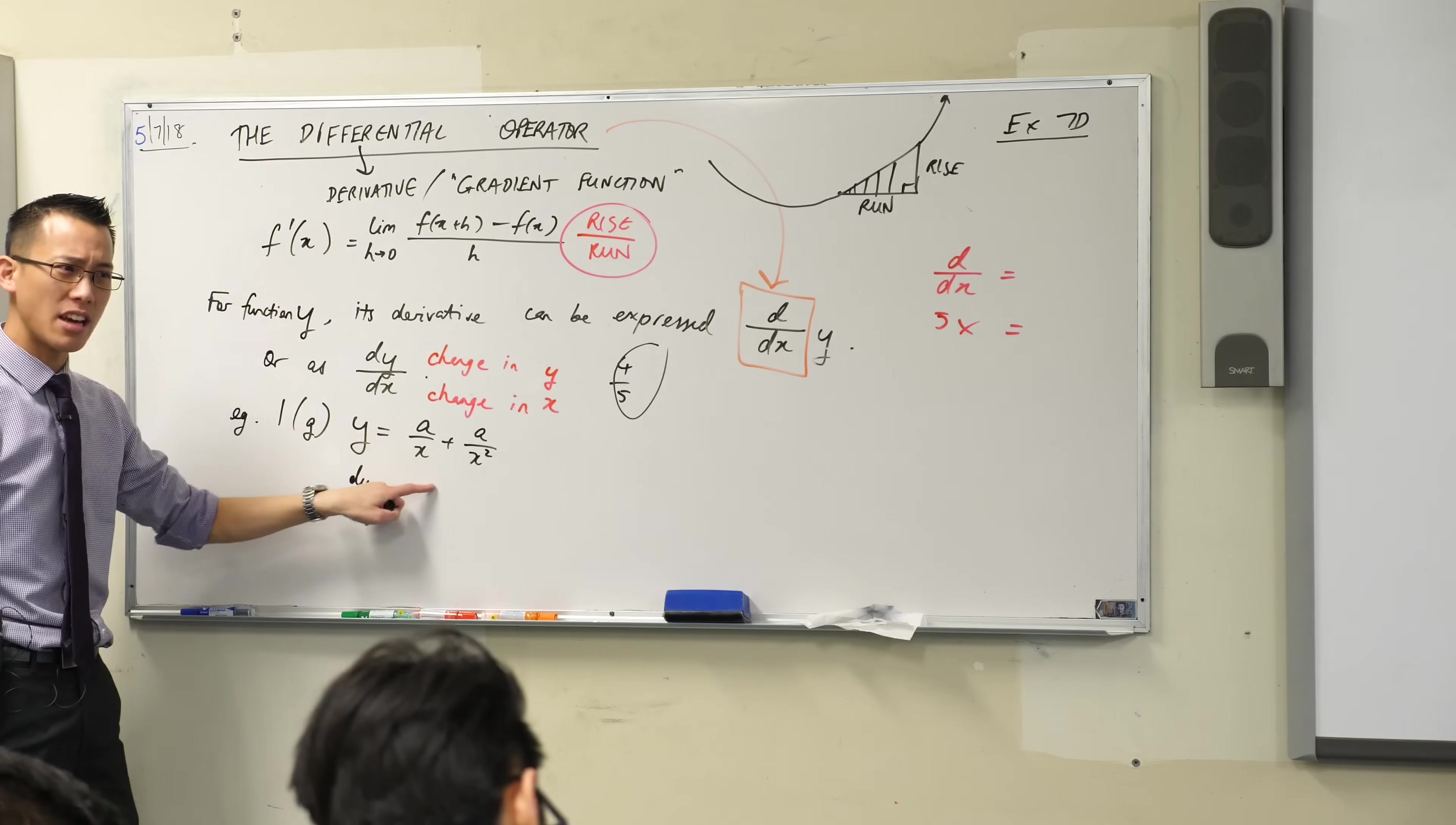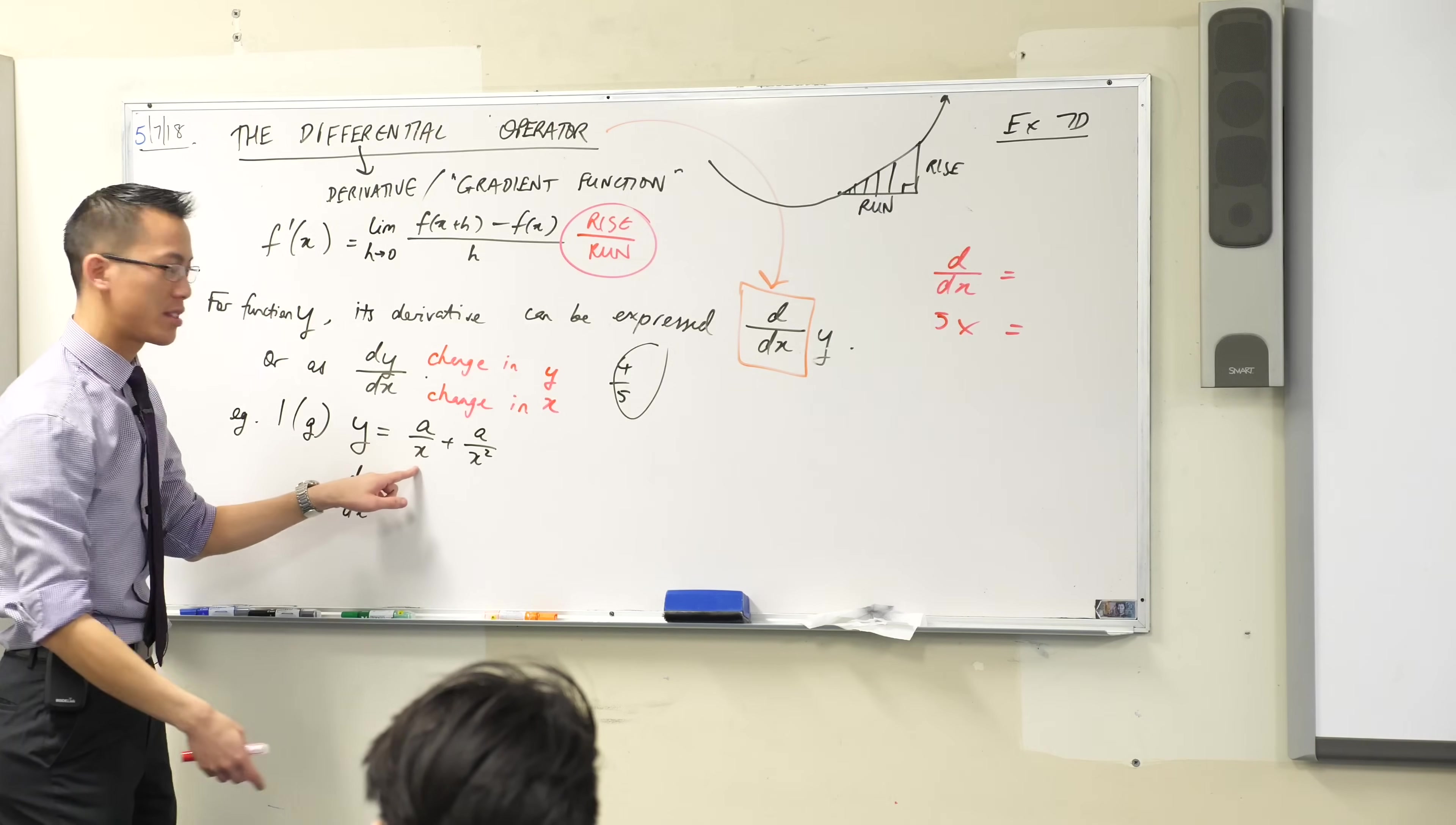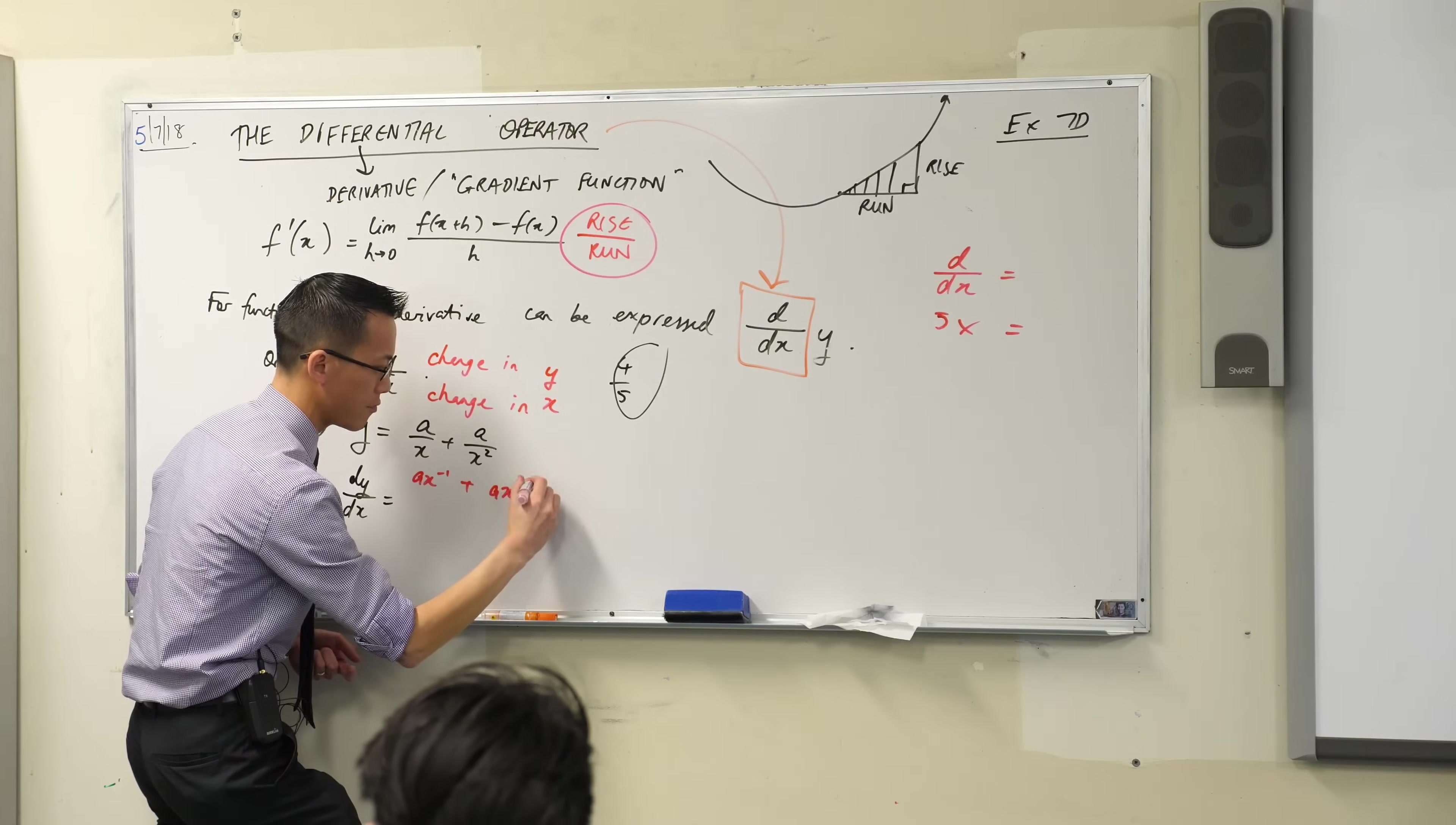This I should write a bit differently, right? It might be handy to write this not as a fraction, but as what kind of things are we good at differentiating at the moment? Things where the x has a power, where there's indices, right? So instead of a/x, I'm going to write that as ax to the negative 1. And then here I'm going to have ax to the negative 2. Happy times.